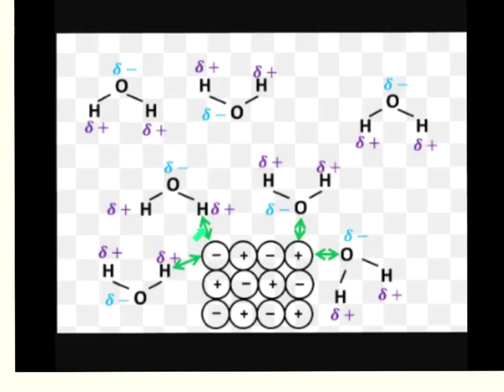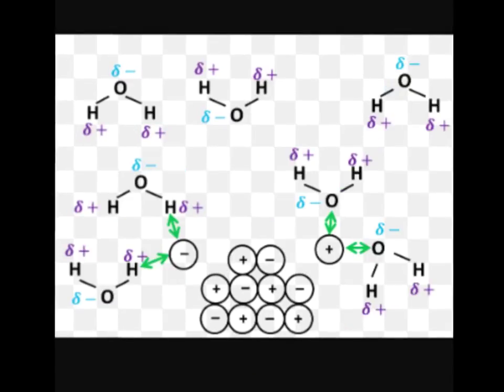The overall effect of that is it just starts to break the lattice down. You can see quite clearly now in this diagram the lattice is starting to be broken down. This positive ion is being pulled away by the attraction from the slightly negative part of the water molecule—the oxygen—and the negative ion is being pulled away by the slightly positive hydrogen part of the water.